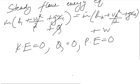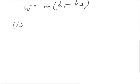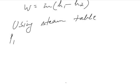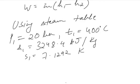So the equation reduces to w equals m.h1 minus h2. Using steam table at p1 equals 20 bar and temperature equals 400 degrees Celsius, h1 equals 3248.4 kJ per kg and entropy equals 7.1292 kJ per kg.